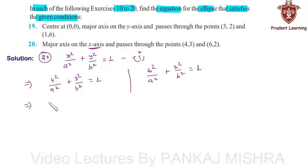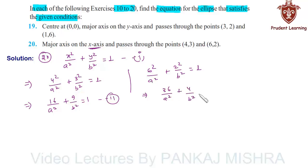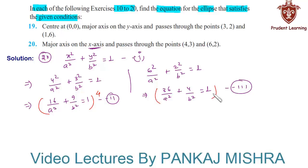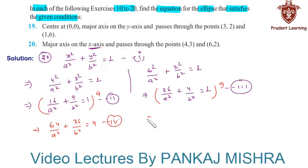Substituting the points: 16 over a² plus 9 over b² equals 1 — equation 2, and 36 over a² plus 4 over b² equals 1 — equation 3. Multiplying equation 2 throughout by 4 gives 64 over a² plus 36 over b² equals 4 — equation 4. Multiplying equation 3 throughout by 9 gives 324 over a² plus 36 over b² equals 9 — equation 5.